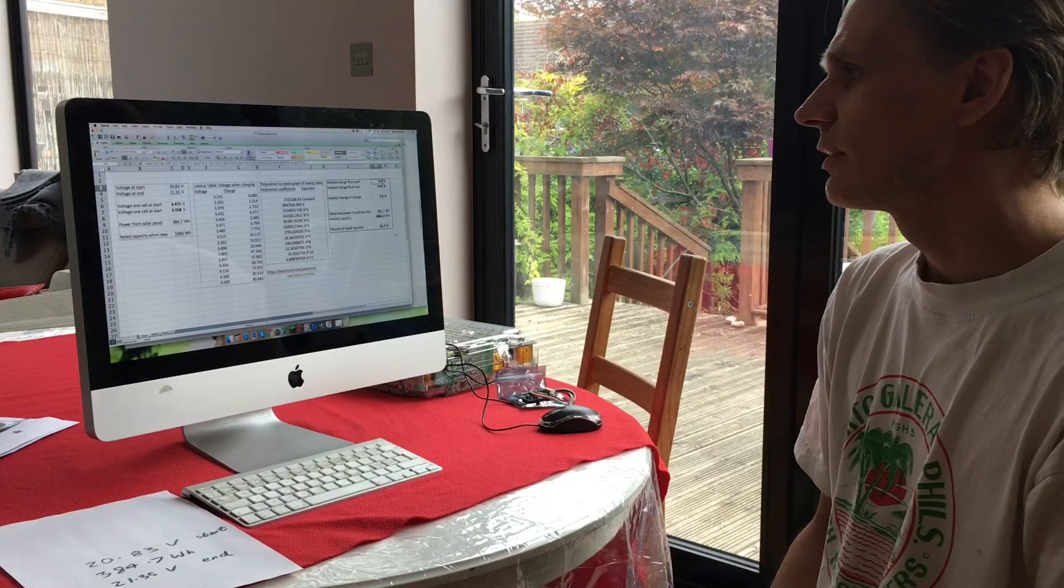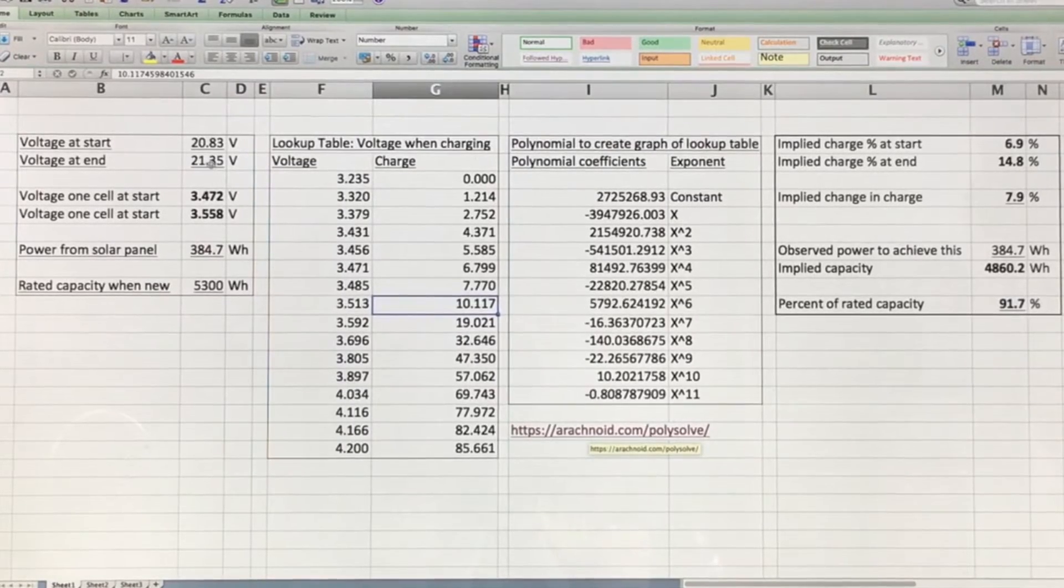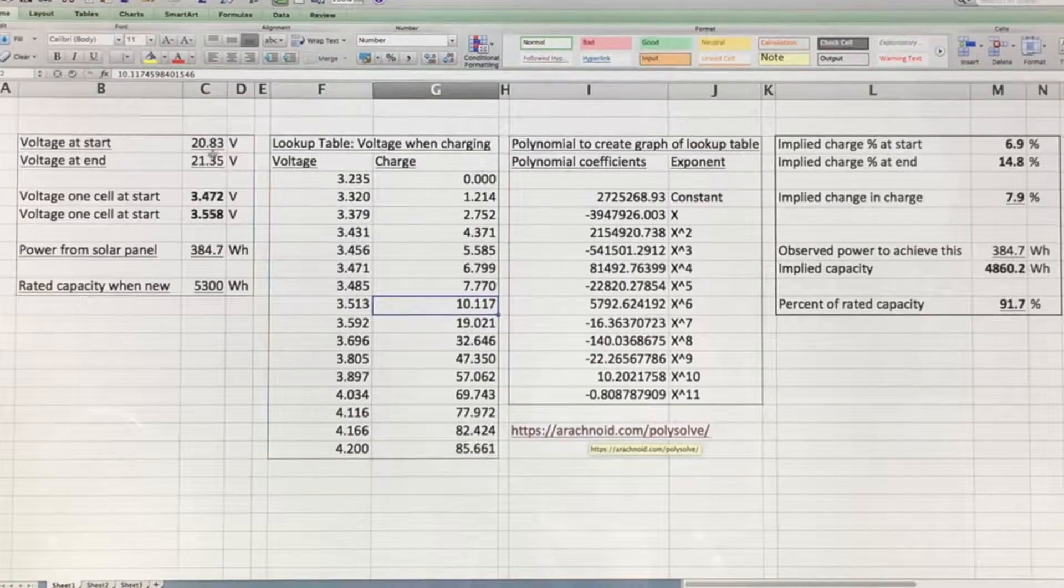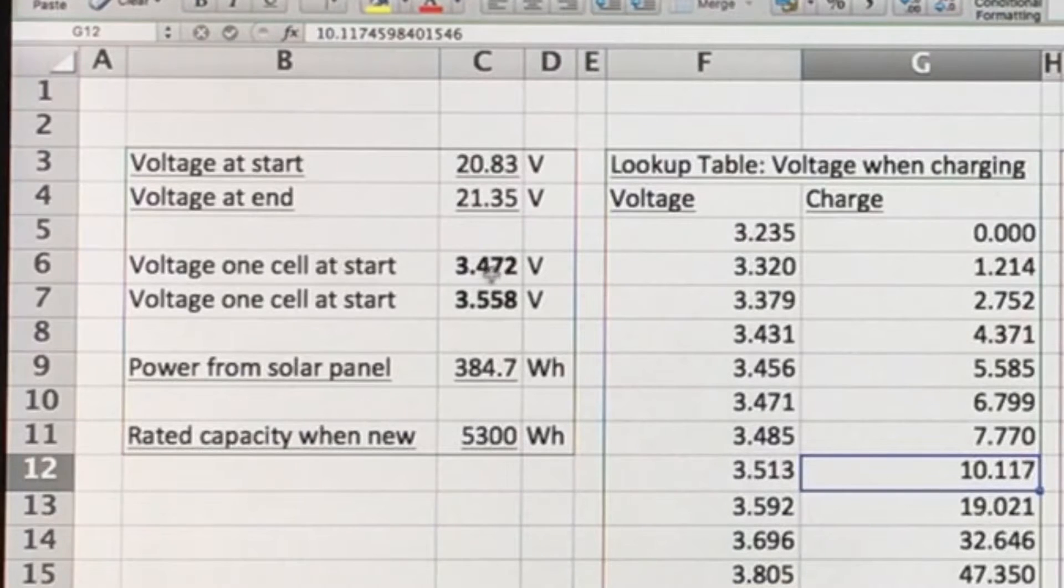And you do that using a formula. We have the 20.83 volts at the start. That corresponds to 3.472 volts for each cell in the battery. That's just that divided by 6. Similarly, that voltage at the end corresponds to 3.558 volts.